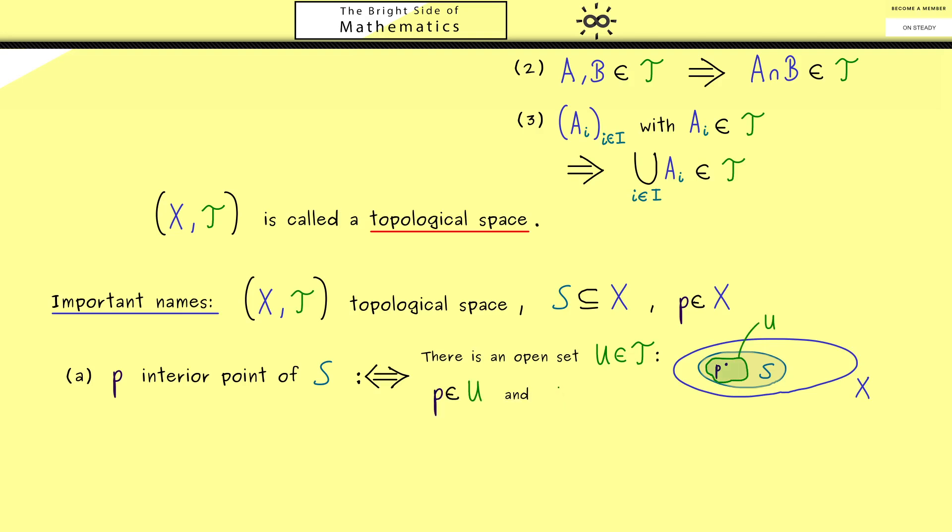Now this open set should contain the point p and it should also lie completely inside the set S. And if we have these two properties, we call p an interior point of S.